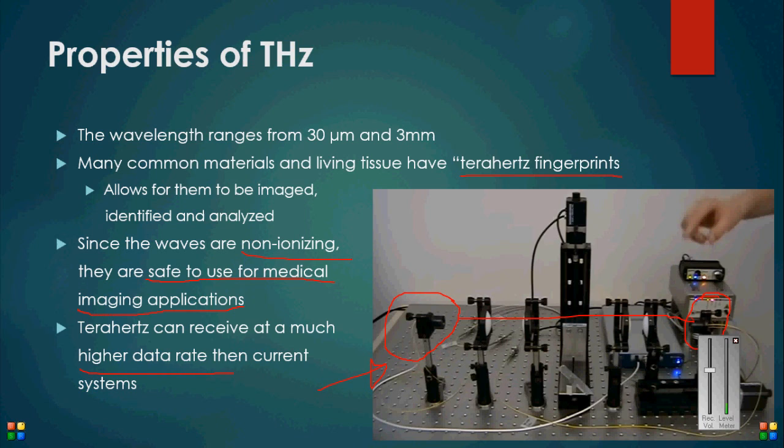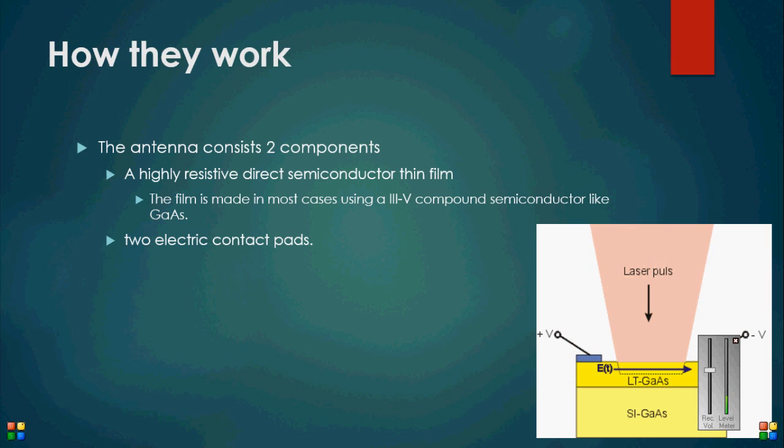Now that we have a background on terahertz radiation, we can speak specifically about terahertz antennas. For any application, we need to understand the basic concepts of terahertz antennas, which are the methods used to transmit and receive terahertz radiation. Specifically for imaging purposes, we will dissect the photoconductive antenna, or the PCA.